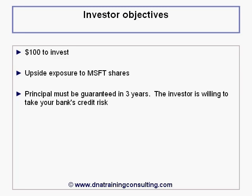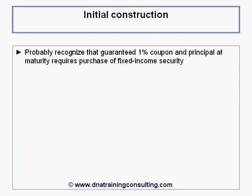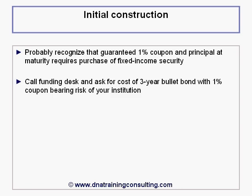Finally, the investor specifies that she would like to receive a coupon paid annually equal to 1% of her principal. You can probably recognize right away that to provide the guaranteed coupon of 1% and the principal at maturity, you will need to invest a large portion of the investor's money in some sort of fixed-income security. You therefore call up your funding desk and ask them how much it would cost to purchase a 3-year bullet bond with a 1% coupon bearing the credit risk of your institution.